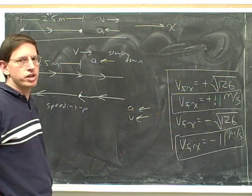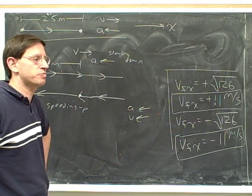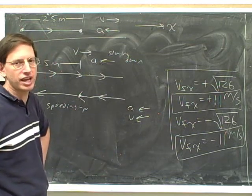So your speed when you pass a point going one way will be the same as your speed if you come back and pass that point again going the other way.